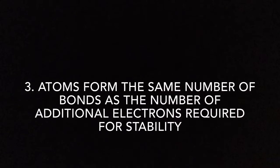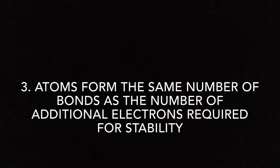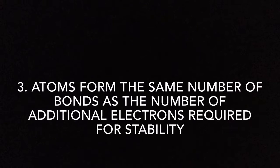Number 3: atoms form the same number of bonds as the number of additional electrons required for stability. For example, hydrogen and halogens require one electron to be stable, so they tend to form one bond. Similarly, oxygen requires two electrons to be stable, so oxygen tends to form two bonds. Nitrogen needs three electrons, so it will form three bonds. Carbon needs four electrons, so it will form four bonds.